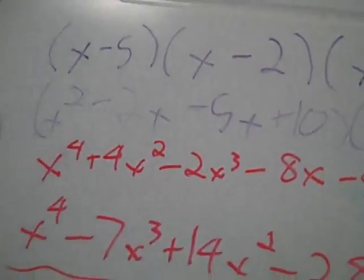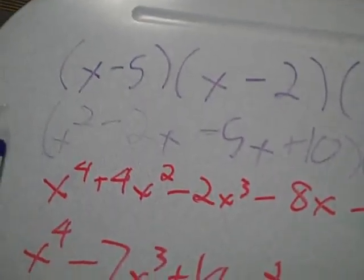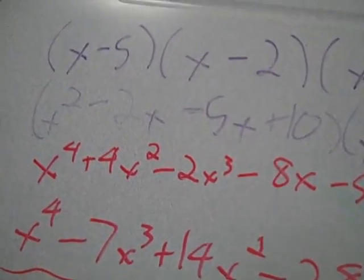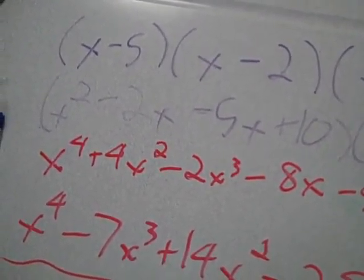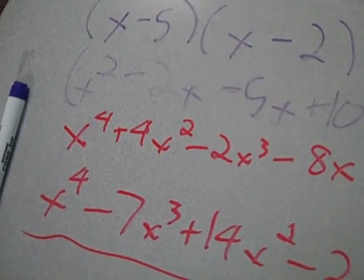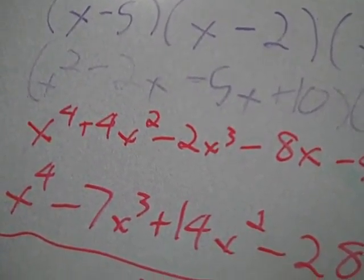The next step to get the problem is to multiply them all together using factoring. You multiply x plus 5 times x minus 2 first, and you get x squared minus 2x minus 5x plus 10.